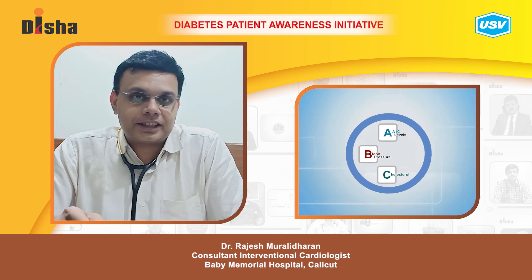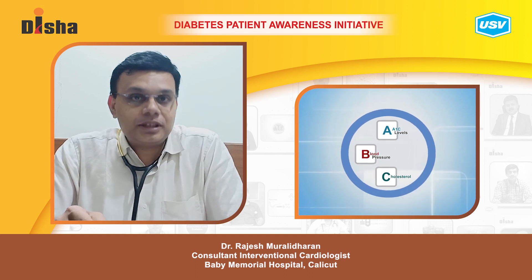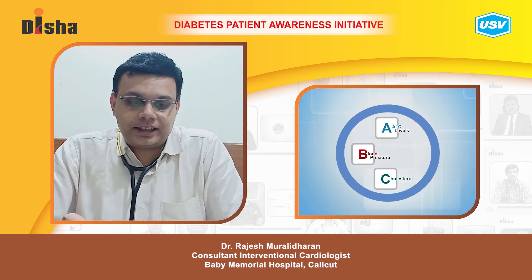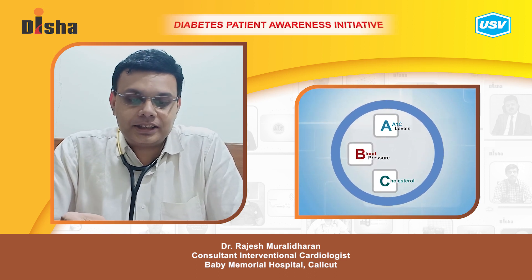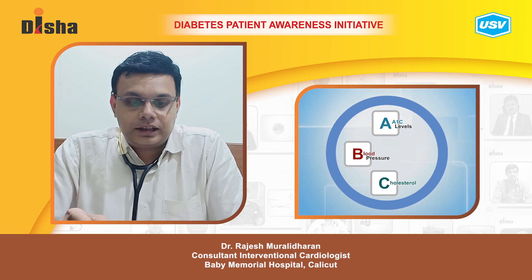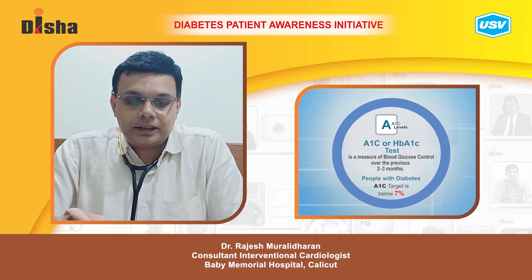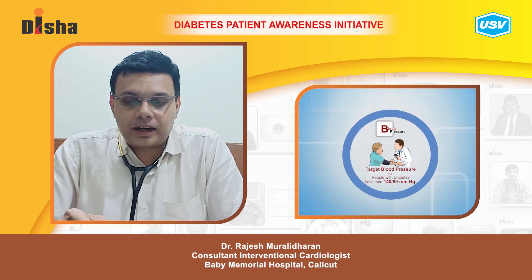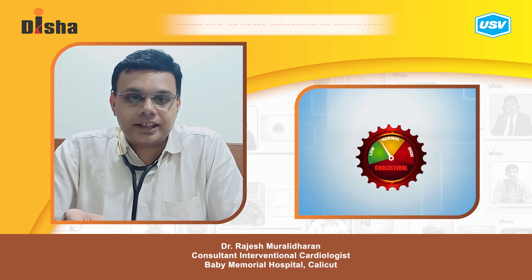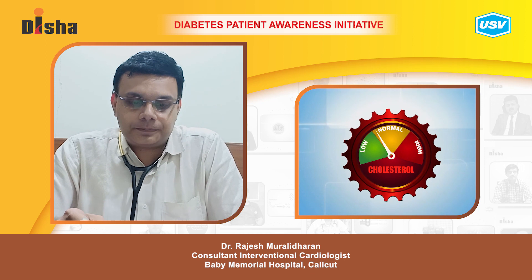Today we will be discussing about the ABCs of diabetes. ABCs of diabetes include A for A1c, B for blood pressure, and C for cholesterol.